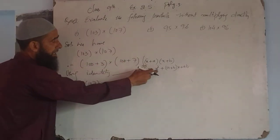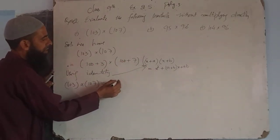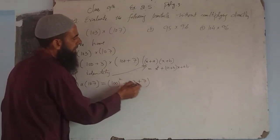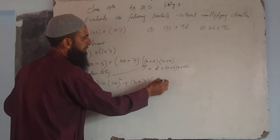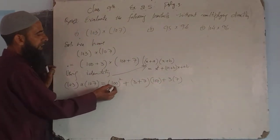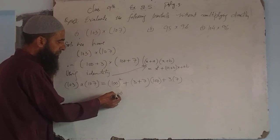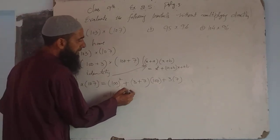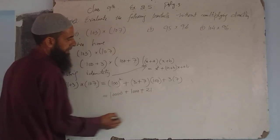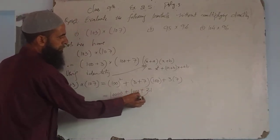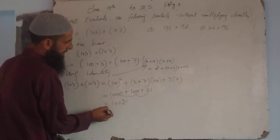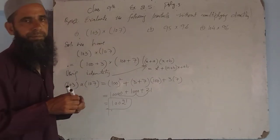103 into 107 is equal to x², that is 100², plus (a + b) into x — a ka value 3, plus b ka value 7 — that is 10 into 100, that is 1000, plus ab that is 3 into 7 which is 21. So we get 10000 + 1000 + 21, that is 11021.